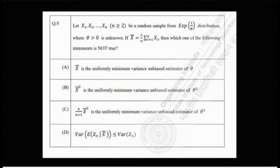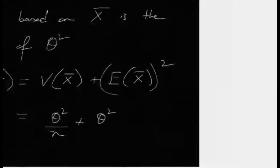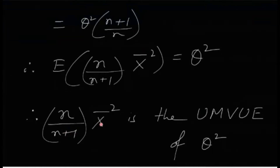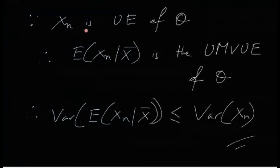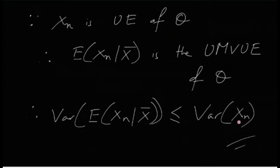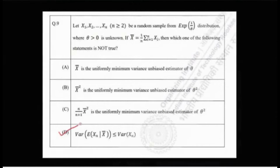This immediately shows that x̄² cannot be the UMVUE of θ², because (n/(n+1))·x̄² is the UMVUE of θ². So option B is obviously wrong — it is the false statement. Additionally, since X_n is also an unbiased estimator of θ, the conditional expectation of X_n given x̄ is the UMVUE of θ, and its variance must be less than or equal to the variance of X_n. So option D is also true. Options A, C, and D are all true; option B is not true.